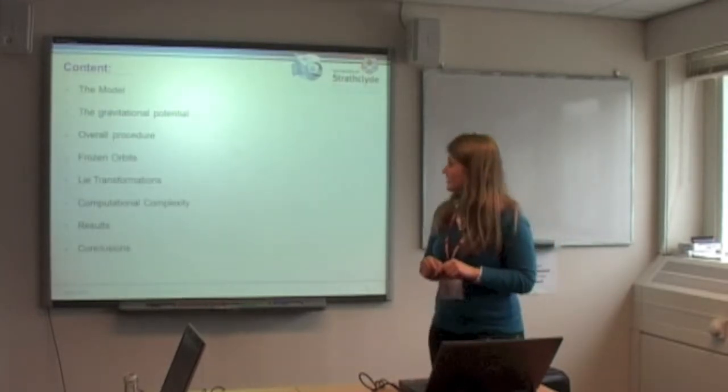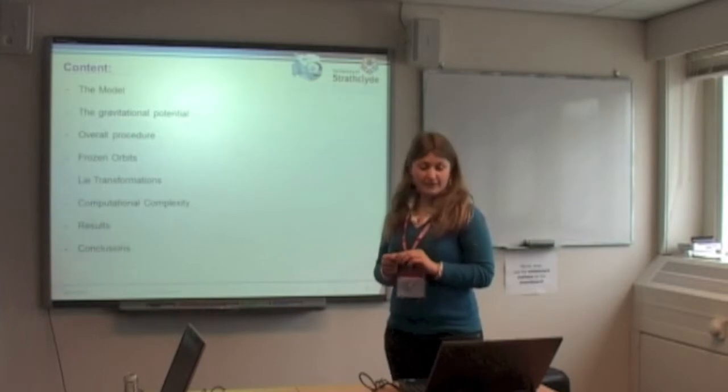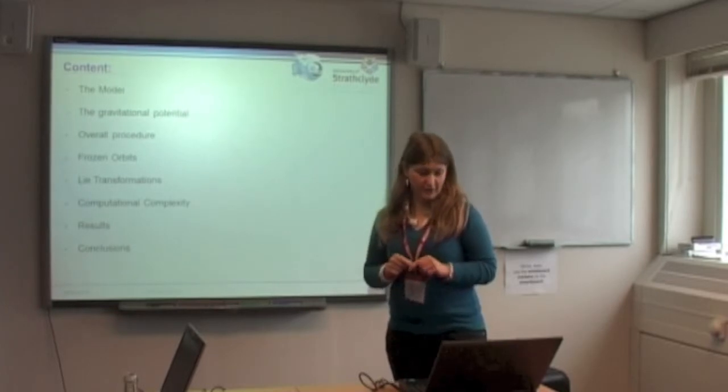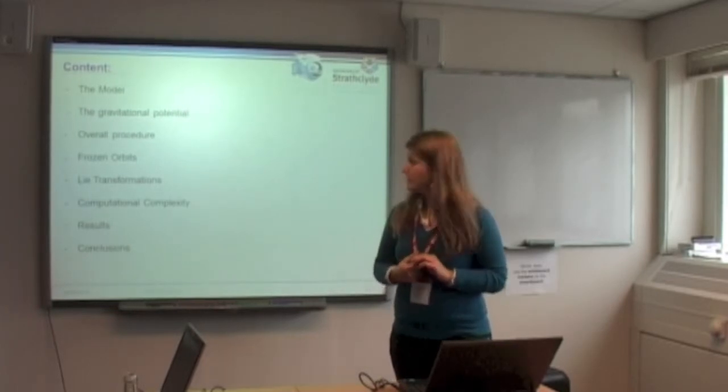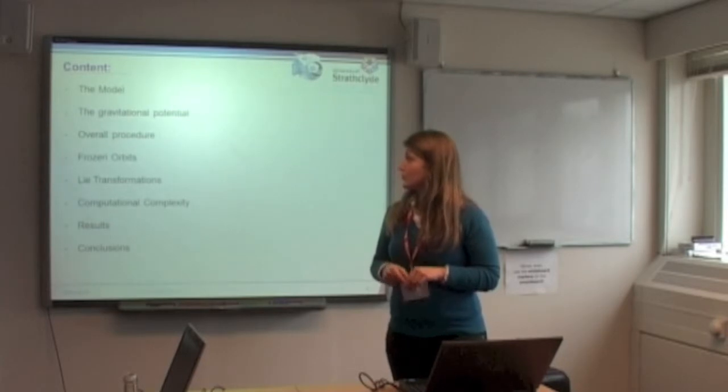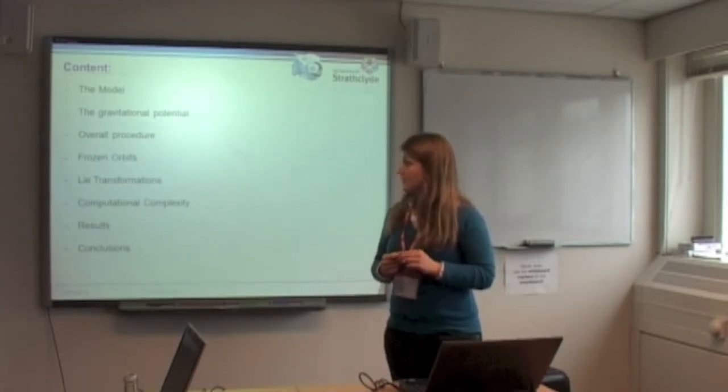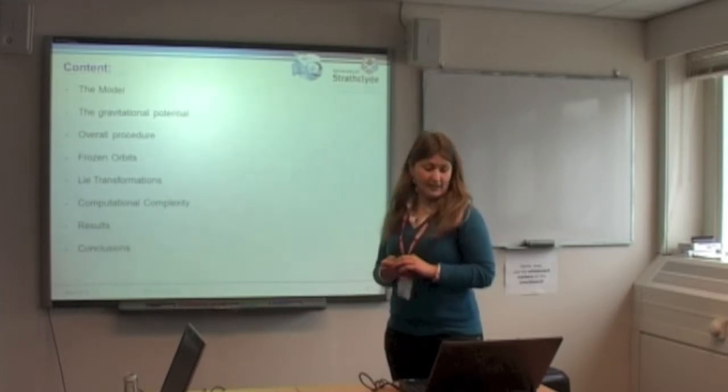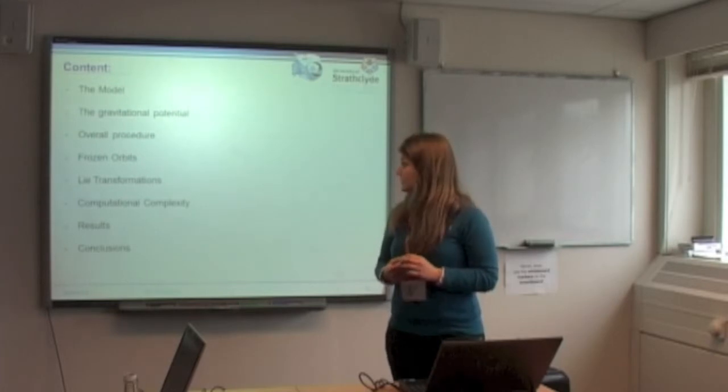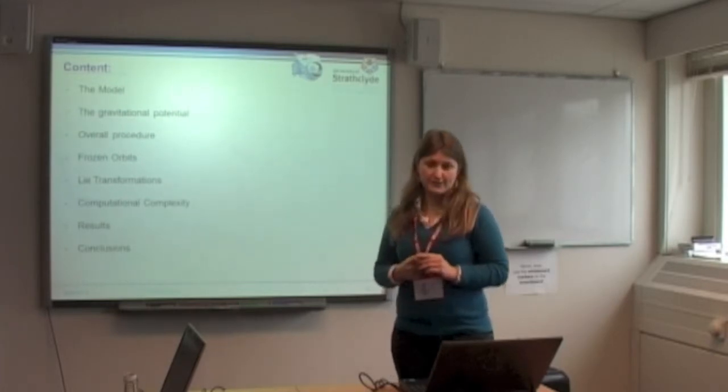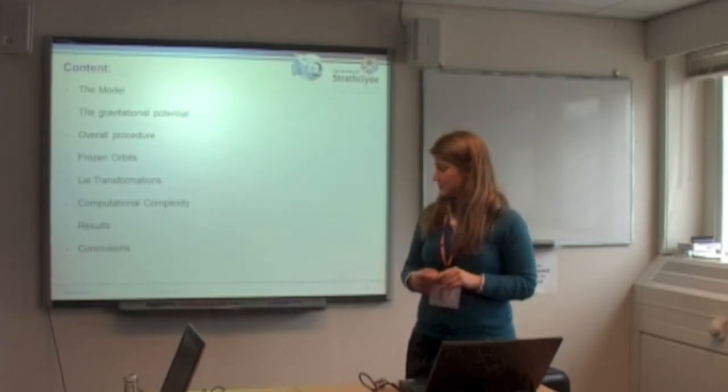At the beginning, take a look at the model, then see how to derive the gravitational potential on which we are basing the whole model. Take a quick look at the overall procedure which will lead us to find some frozen orbits. The whole procedure is done by Lee transformation, so we will just take a very quick look at it. And then speak about the computational complexity of the whole procedure and see the results and the conclusions.